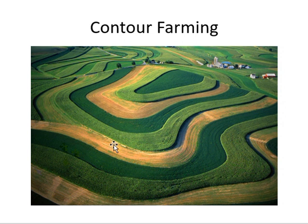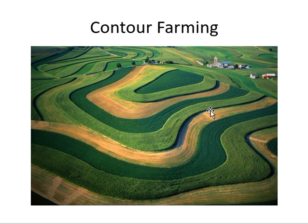Strip cropping can be coupled with contour farming. You can see row crops next to cover crops arranged in a pattern that looks like a topographic map, because the farmer is actually plowing and planting at right angles to the slopes. This works well in hilly, undulating terrain where runoff could be a problem. Instead of plowing up and down the slopes, plowing perpendicular to them makes the rows act as natural barriers to reduce runoff and soil erosion.